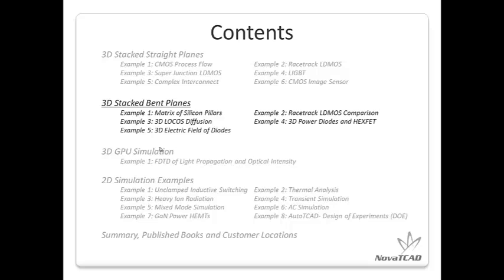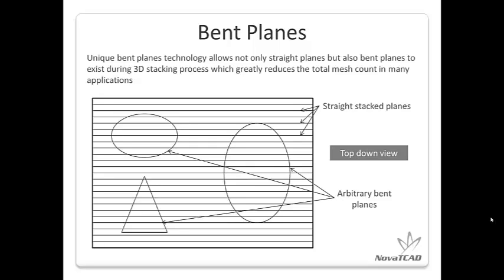The next topic is 3D stacked bent planes. Bent planes are not straight planes — they're used to simplify the simulation of complicated structures with large variations in the Z direction. Both straight planes and bent planes can coexist during the 3D stacking process, and they can dramatically reduce the total mesh count in many applications.